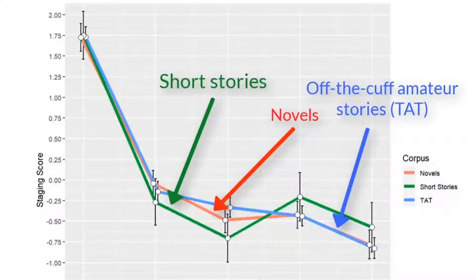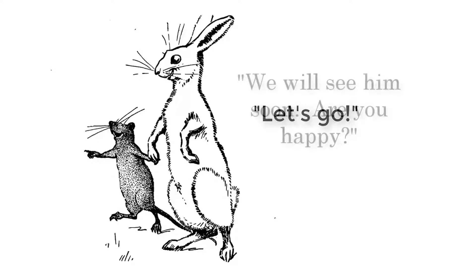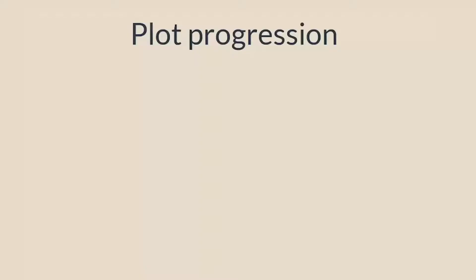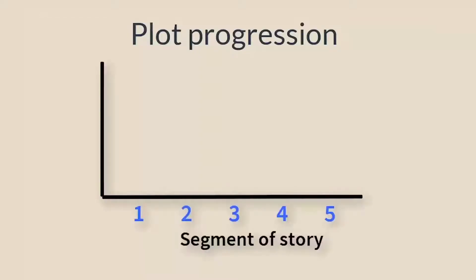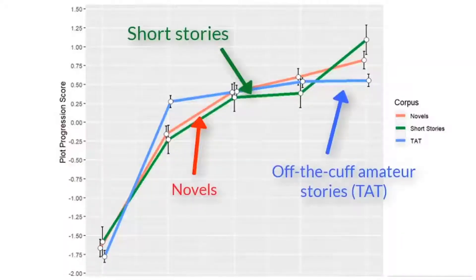Narrative structure, then, is not tied to content, length, or formality — it is something deeper, more universal. Once the stage is set, the story can begin. Words that reflect movement and change over time should increase. Two of the main players are auxiliary verbs and pronouns, which by their very nature are action-oriented and social. We assumed that over the course of the story, markers of plot progression would increase — and that's what we found across all story genres.